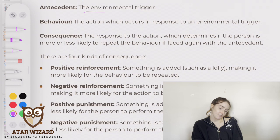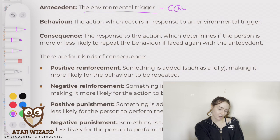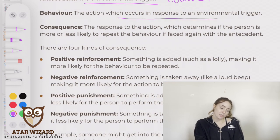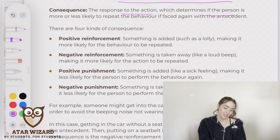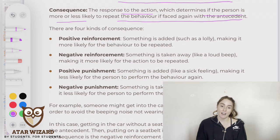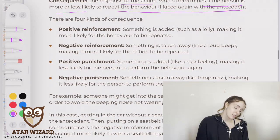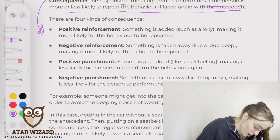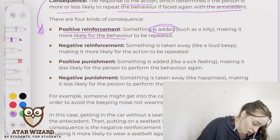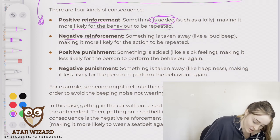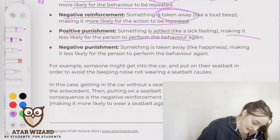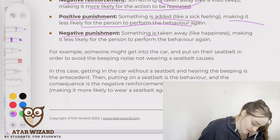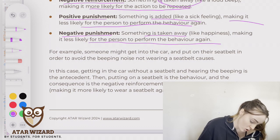The antecedent is the environmental trigger — what causes the behaviour to occur. The behaviour is the action which occurs in response to an environmental trigger. The consequence is the response to the action, which determines if the person is more or less likely to repeat the behaviour when faced again with the antecedent. There are four types of consequence: positive reinforcement — something is added, making the behaviour more likely to be repeated; negative reinforcement — something is taken away, making it more likely to be repeated; positive punishment — something is added, making it less likely; and negative punishment — something is taken away, making it less likely.